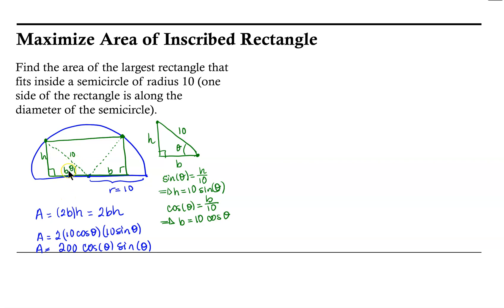Now let's think about the reasonable domain for this function for theta. If theta is 0, then we really don't have a rectangle. And if theta is as much as pi over 2, we also don't have a rectangle. So theta could range from where this corner is near the diameter, in which case theta is 0, up to pi over 2 where the corners approach the top of the semicircle. So the feasible domain for theta is between 0 and pi over 2.